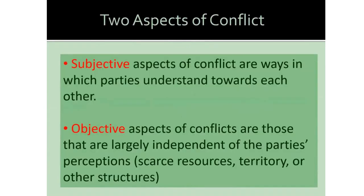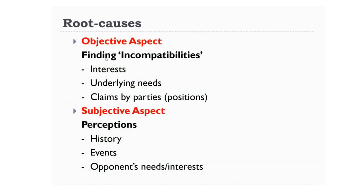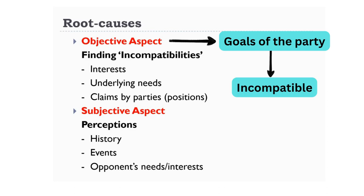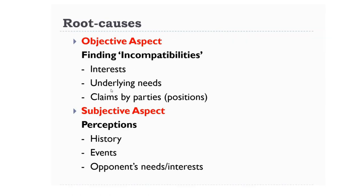If we consider the root causes, we need to look first at the objective aspect, because the objective aspect is usually linked with the goals of the party. For instance, when you have conflict with your mother — you would like to study abroad and your mother is against it — your objective is to go abroad to study and your mother's is to keep you in your own country. Both parties' objectives are there but they are incompatible. To understand the objective of the party, you need to study what the interests and underlying needs of the parties are, and listen to their claims.